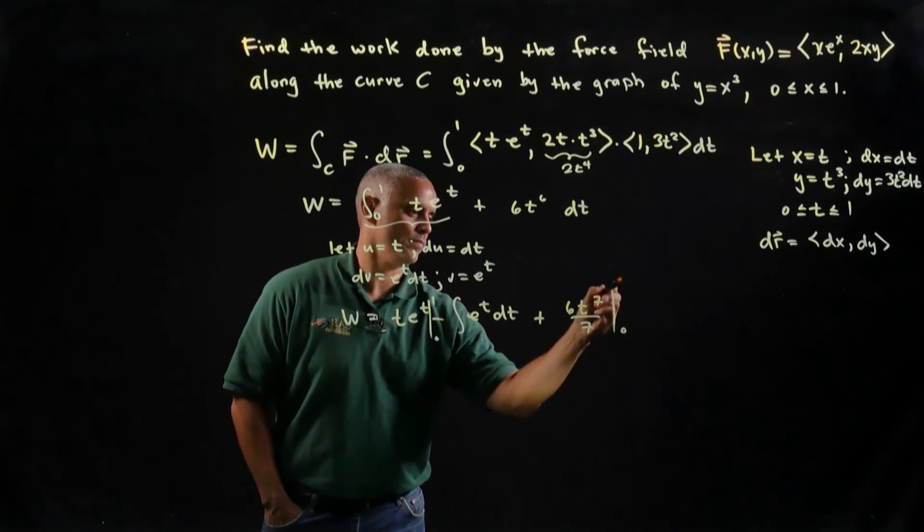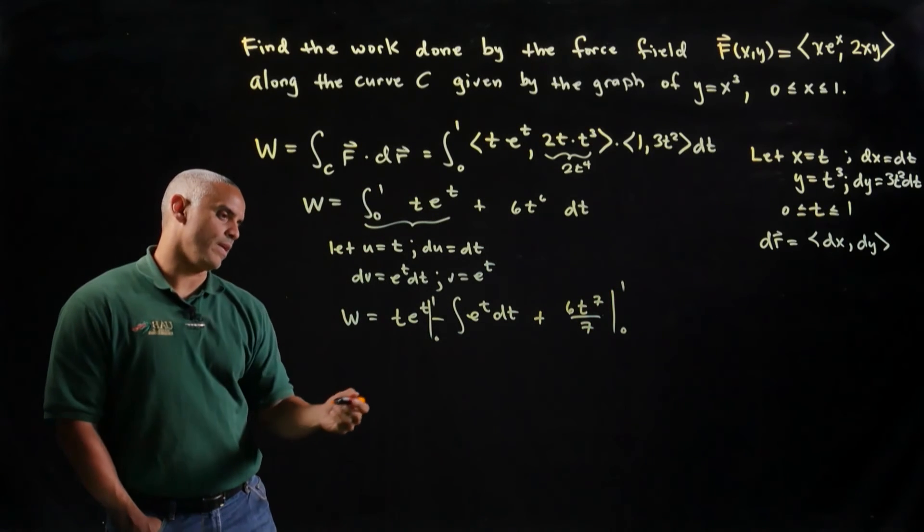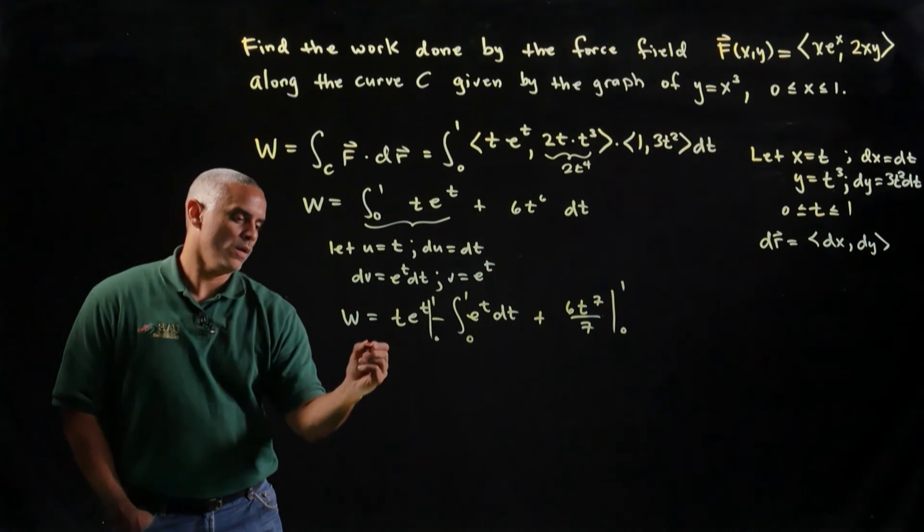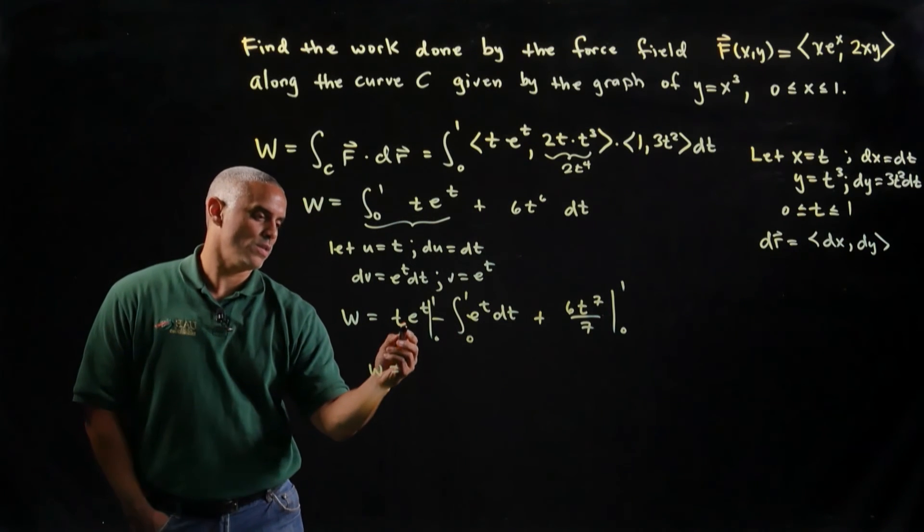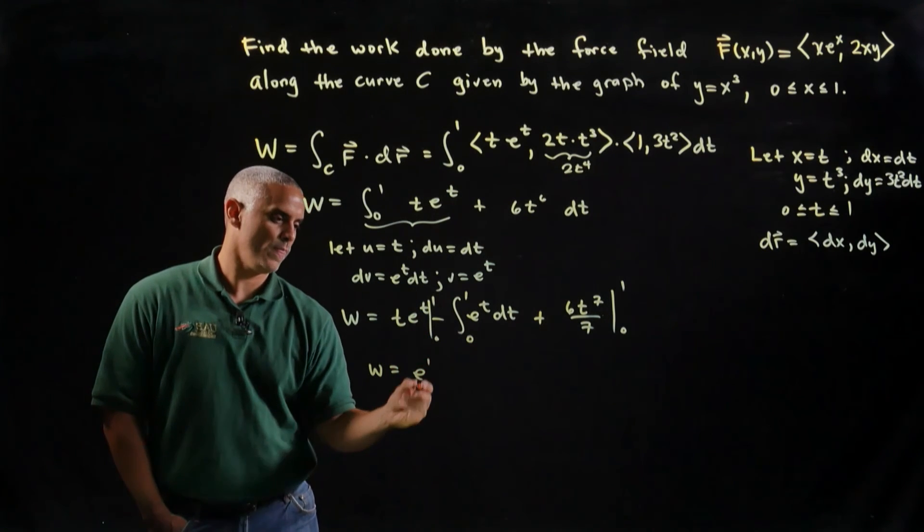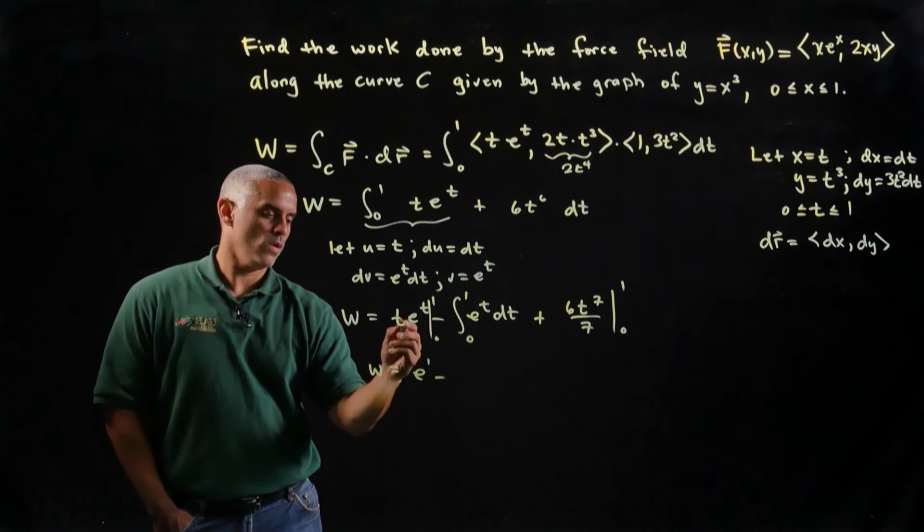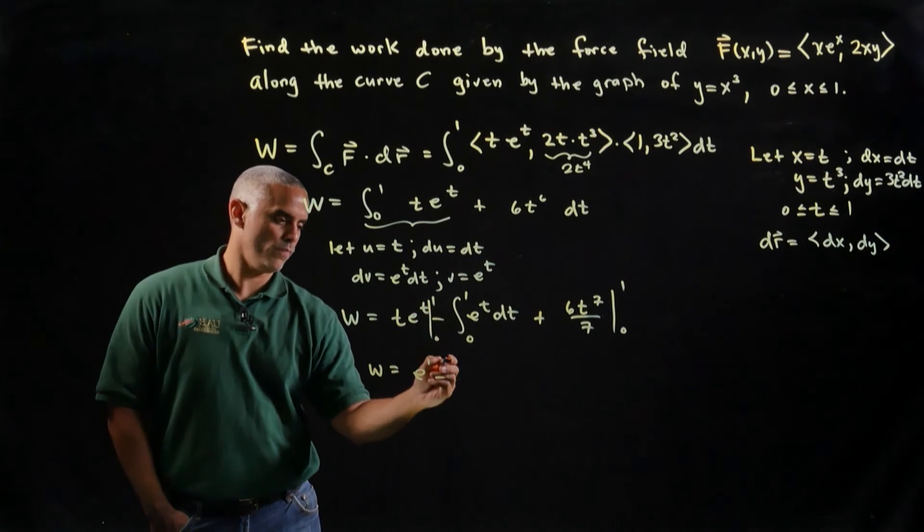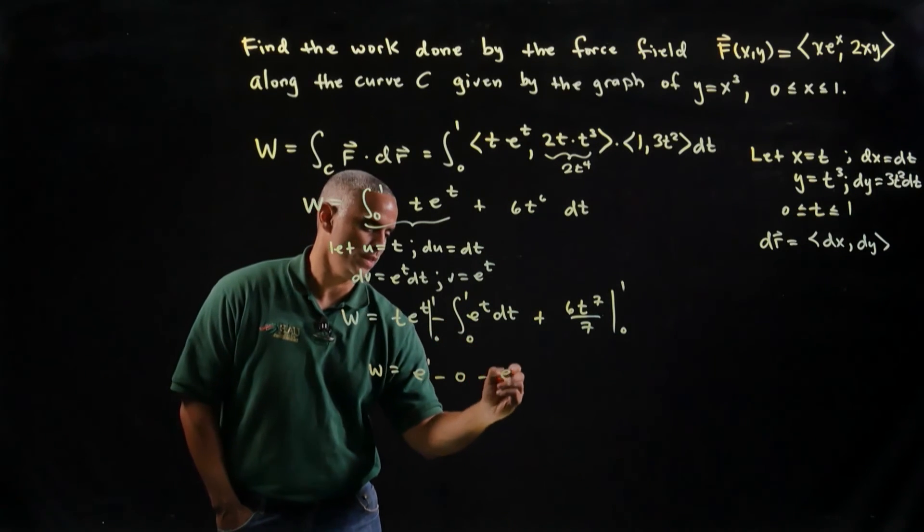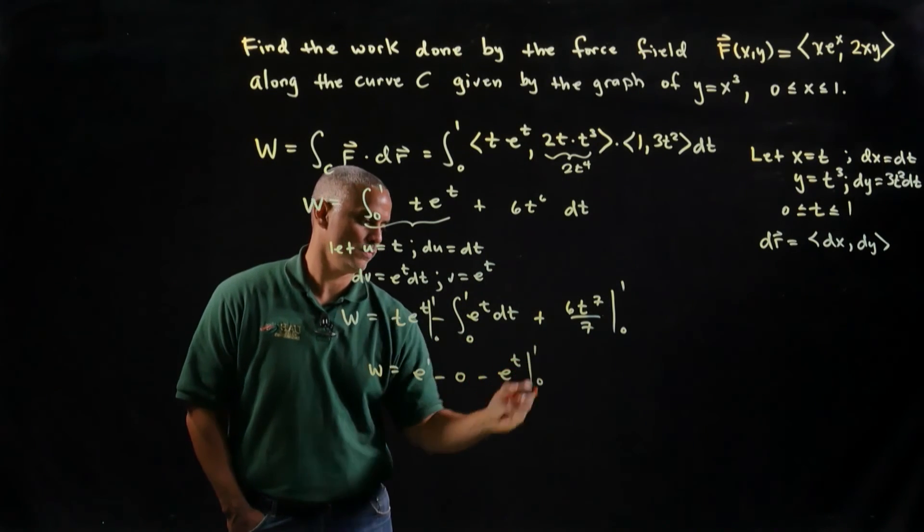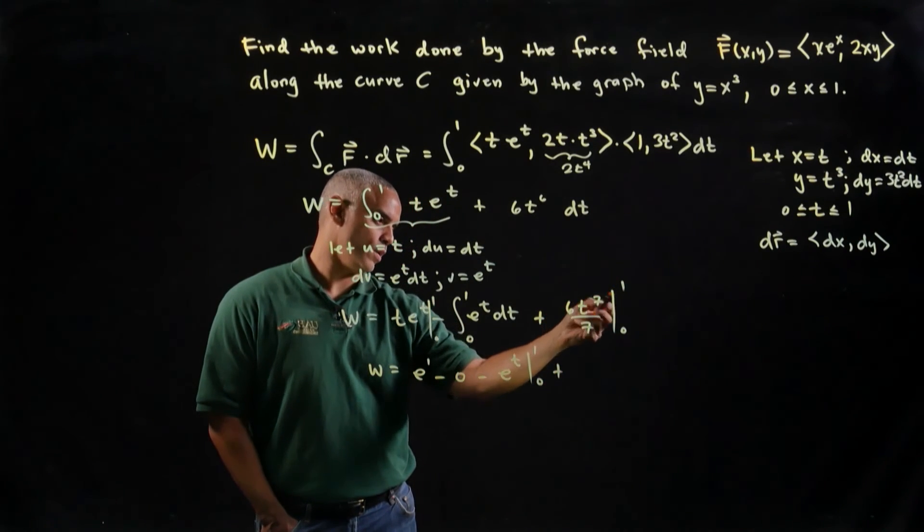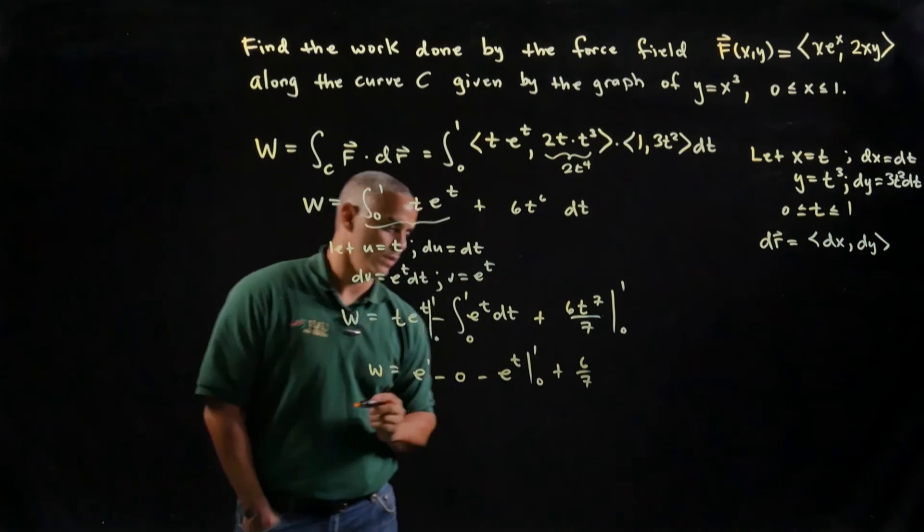So it seems like the only thing that I still need to carry out is this last integral, which is pretty straightforward. So now I get that my work is te^t, so I get 1e to the 1, which is e, minus 0e to the 0, which is 0, minus this integral of e^t is just e^t evaluated from 0 to 1, plus, well this guy only survives at the upper limit. You see that the lower limit, it vanishes, so I'll just write plus 6/7ths.